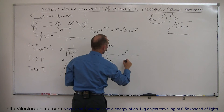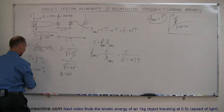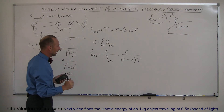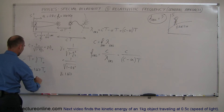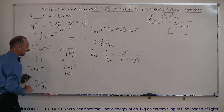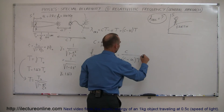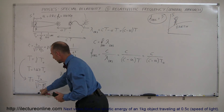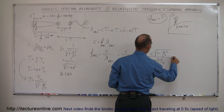T can be related to T-naught by the time dilation equation. Using the general equation, T equals T-naught divided by the square root of 1 minus U² over C². Plugging that in, the observed frequency becomes C divided by C minus U times T-naught, and the square root of 1 minus U² over C² moves up to the numerator.